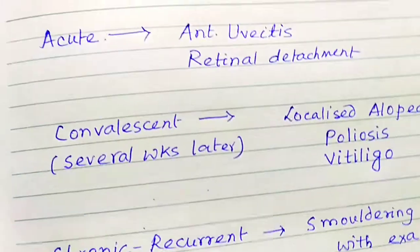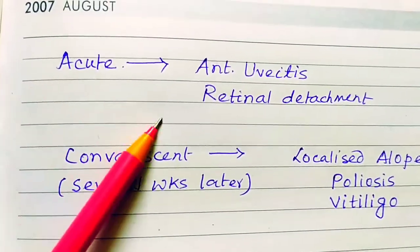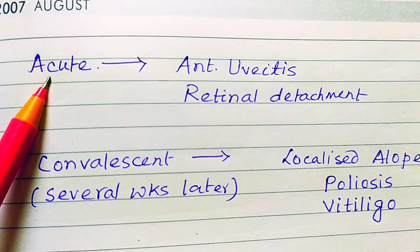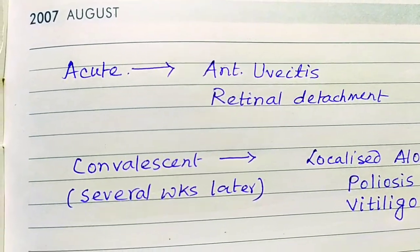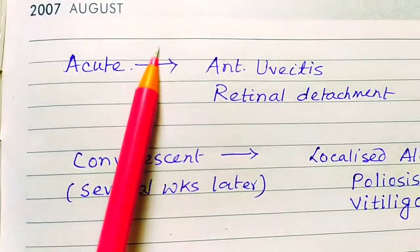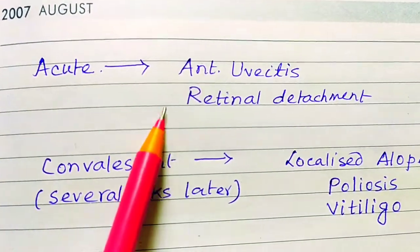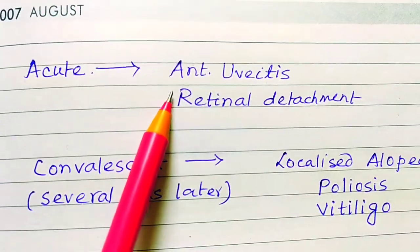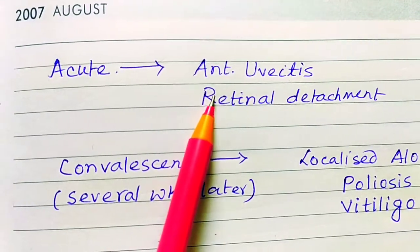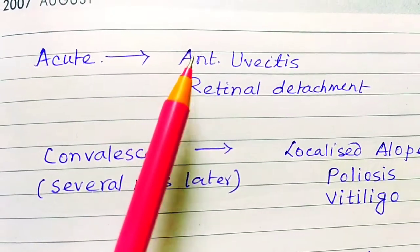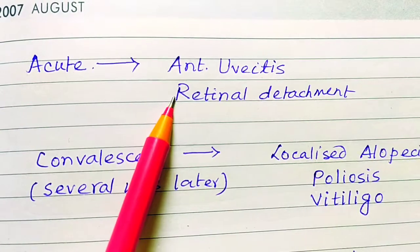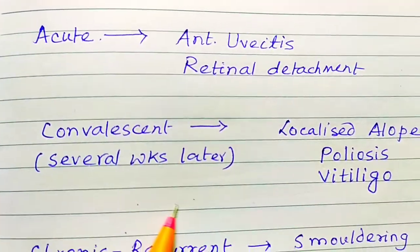In the acute phase, the eye is mainly involved. You will have anterior uveitis and retinal detachment.